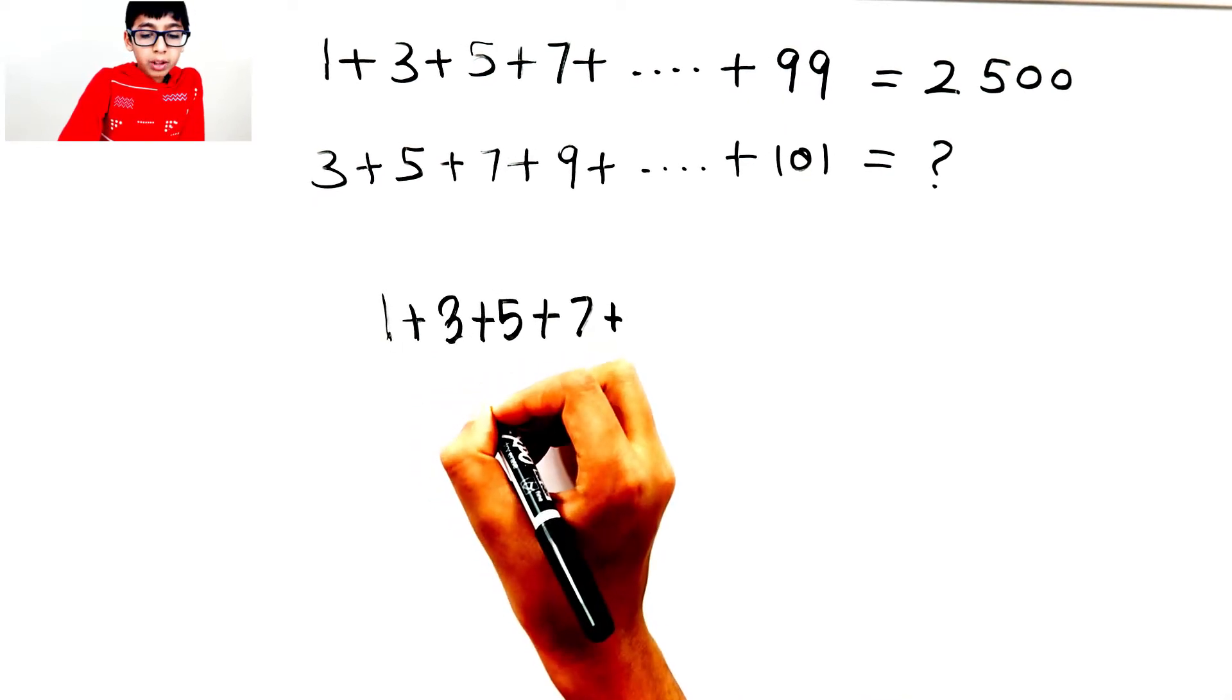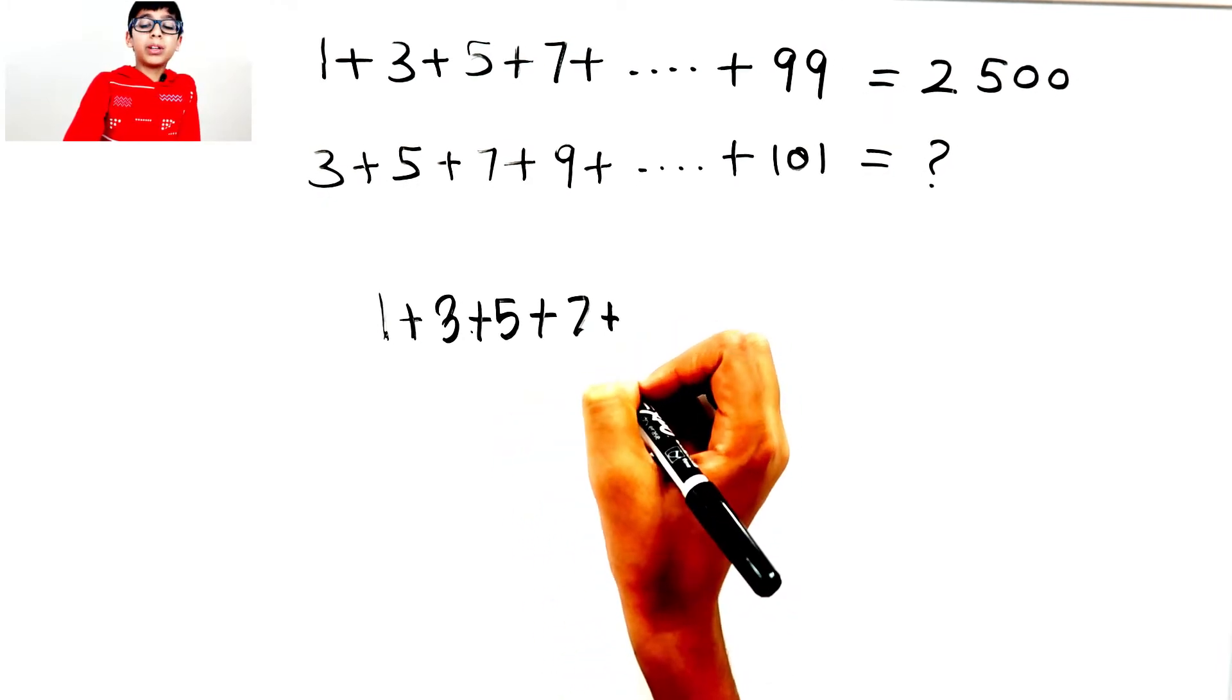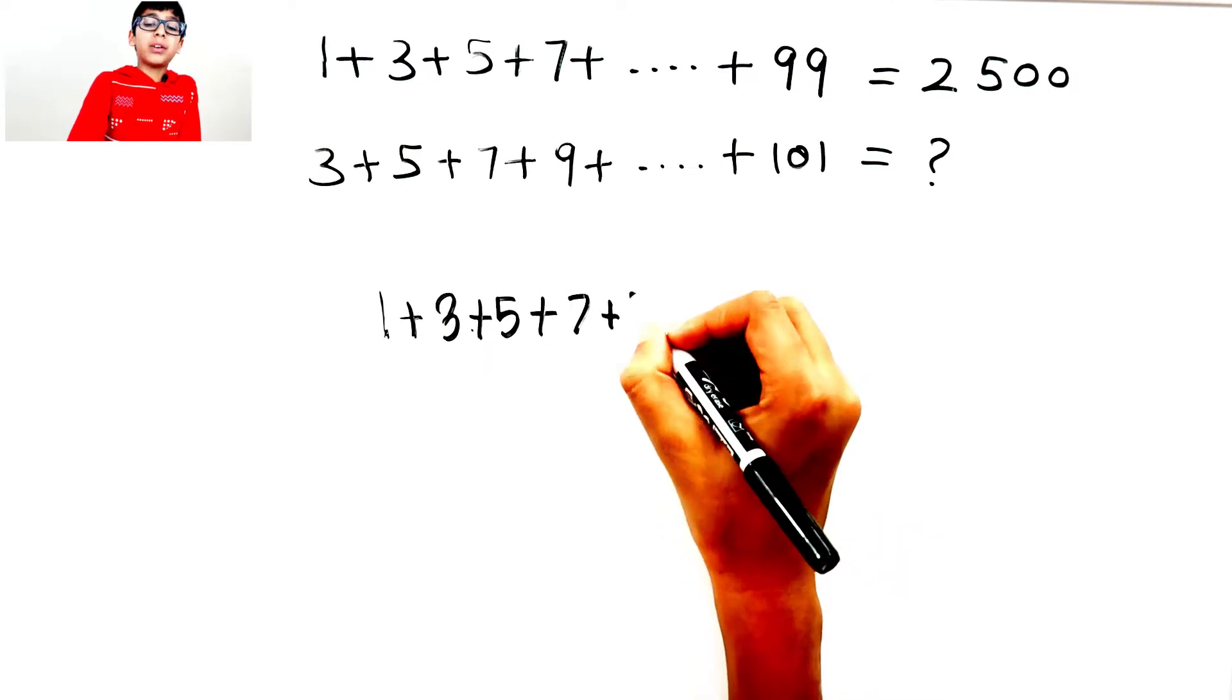...one number and go to the next. We skip one and go to 3, skip and go to 5, skip 6 and go to 7. That means we skip 8 and go to 9.